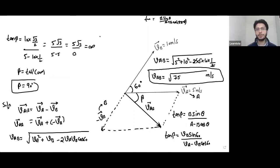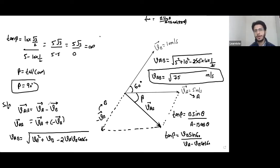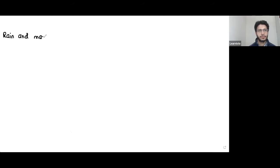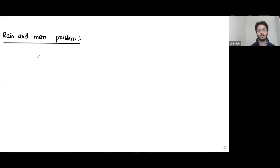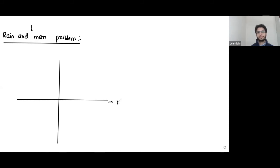In relative velocity in 2D, we have two types of particular problems: the rain-and-man problem and the riverboat problem. The rain-and-man problem is covered in NCERT, while the riverboat problem has limited treatment there. The horizontal surface of the Earth represents all directions — east, west, north, south — and we consider a man standing on the ground.